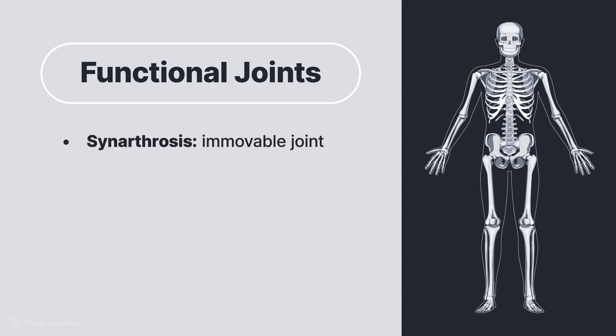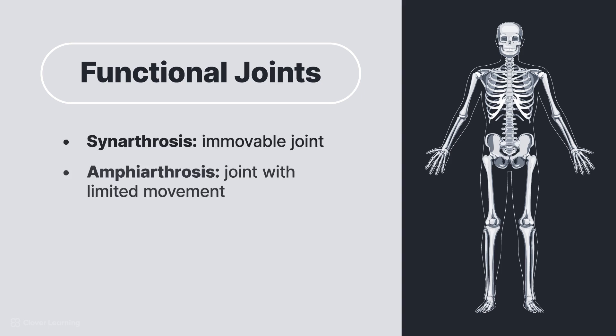Functional joints can be categorized as follows: synarthrosis, an immovable joint; amphiarthrosis, a joint with limited movement; and diarthrosis, a freely movable joint.